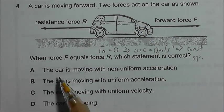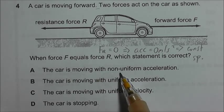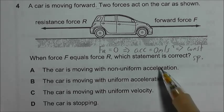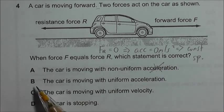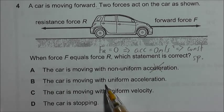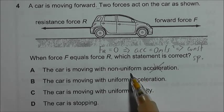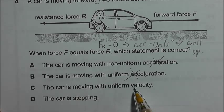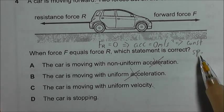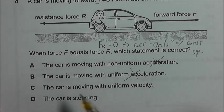So now we look at the options. The car is moving with non-uniform acceleration. This is wrong because there shouldn't be any acceleration at all. Option B, the car is moving with uniform acceleration. This is wrong as well. The car is moving with uniform velocity. Constant speed, uniform velocity. They are the same thing.